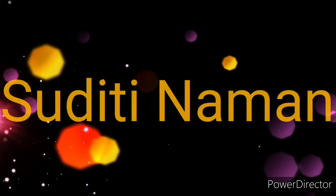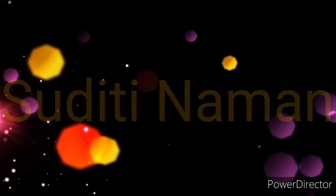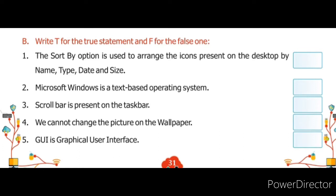Sudhiti Naman. Today I am going to solve the true and false from the exercise of Chapter 2. So let's start. Question number V: Write T for the true statement and F for the false statement. True statement के लिए T लिखना है और false statement के लिए F लिखना है।